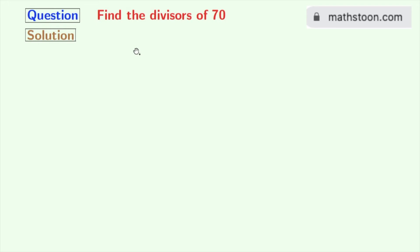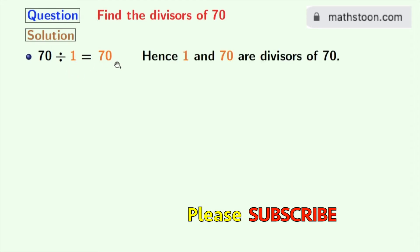Let us start from 1. 70 divided by 1 is 70, so 1 and 70 are the divisors of 70.